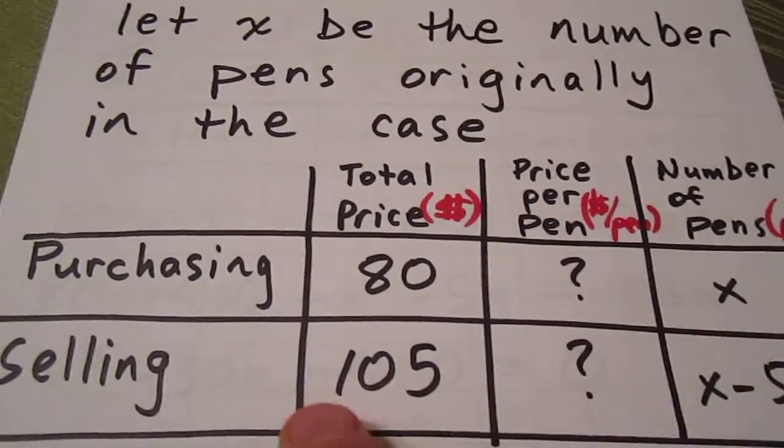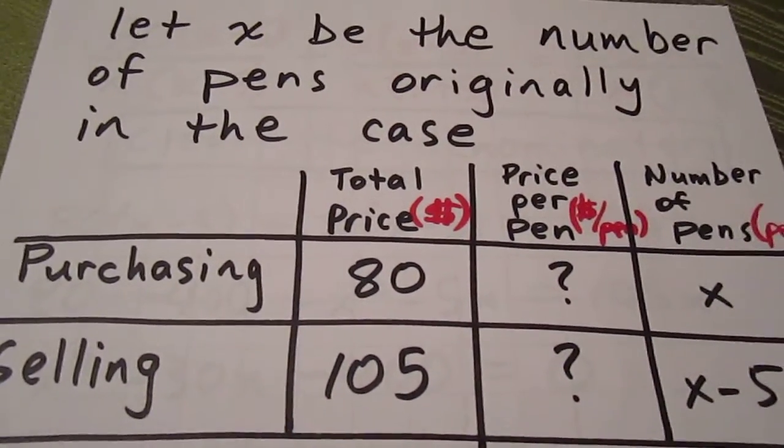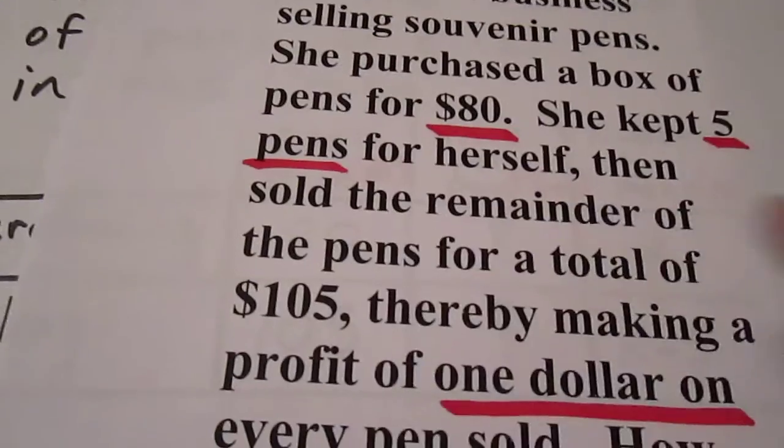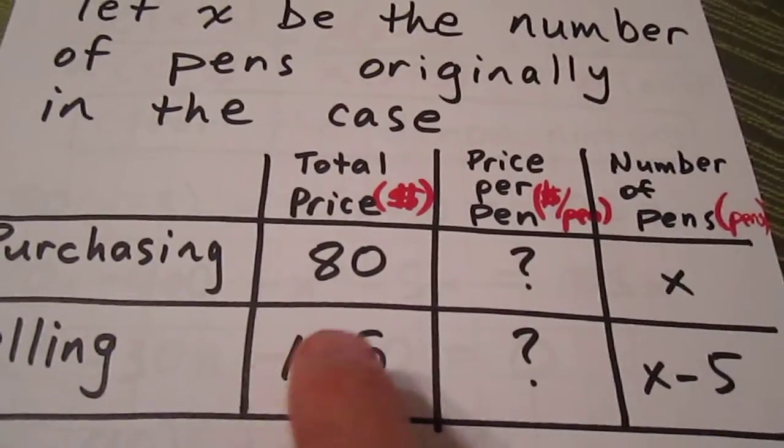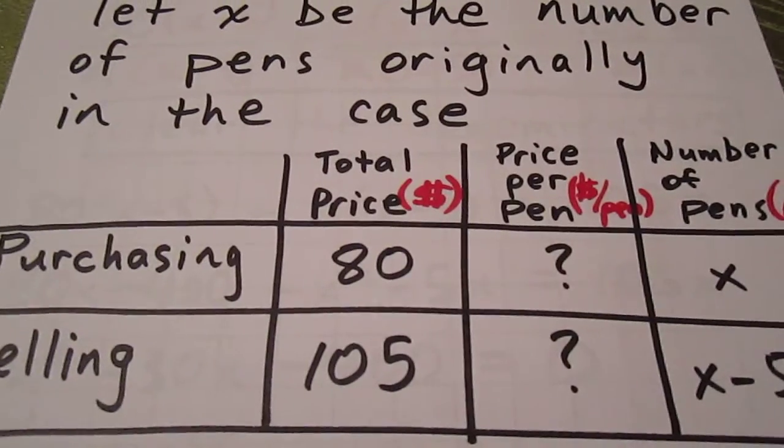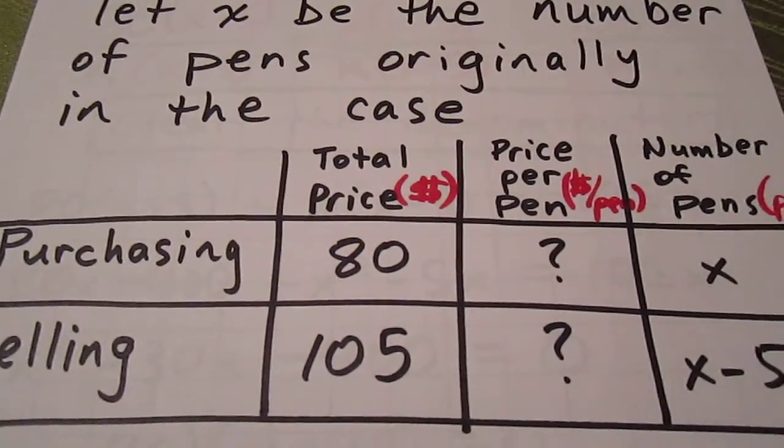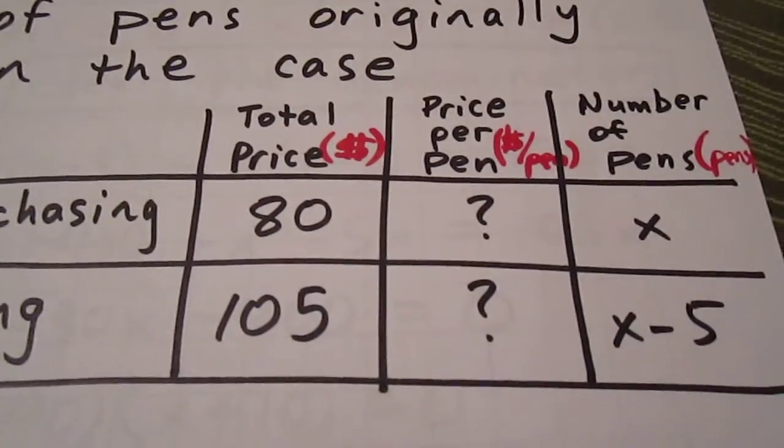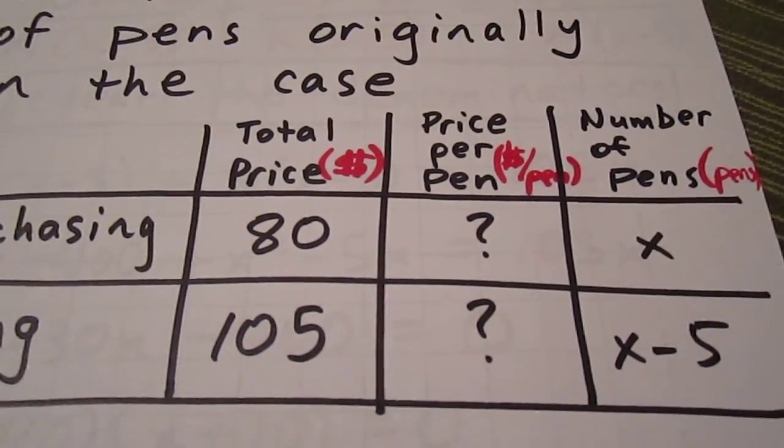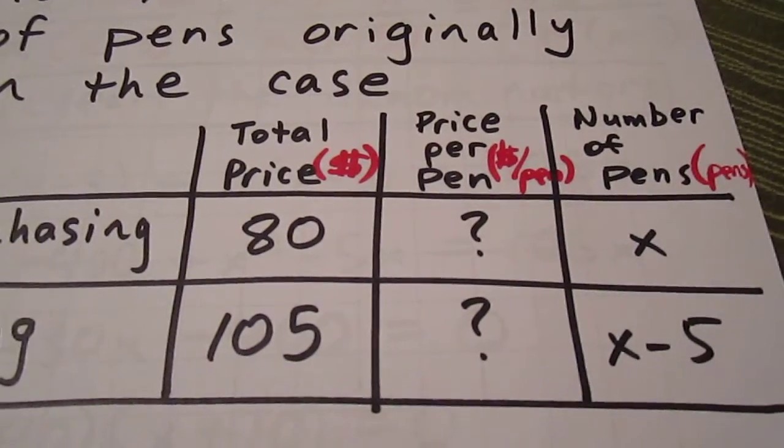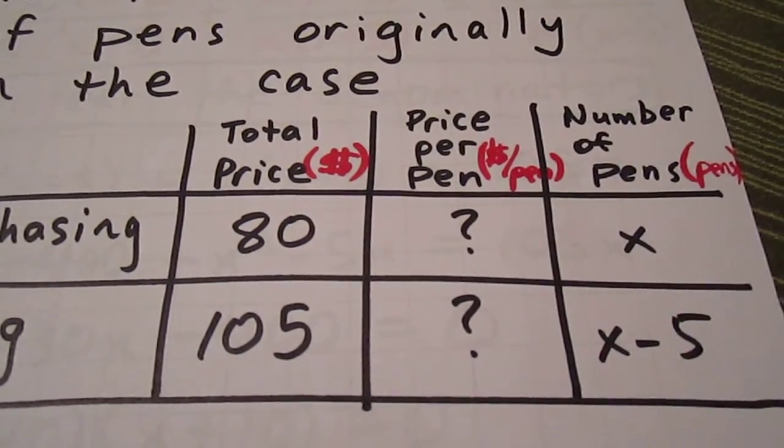With respect to her selling the pens, we know that she sold them for a total of 105 dollars. So the total in the selling scenario is 105. The price per pen is unknown, but the number of pens is now X minus 5. There were X in the case originally. She kept five of them, so she only sold X minus 5.